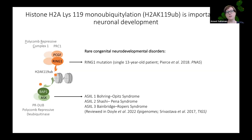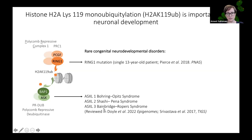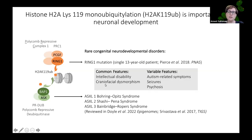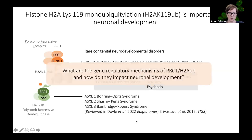H2A ubiquitylation and its regulation are really important in neurodevelopment. This is underscored by several disorders associated with mutations in these components, including mutation of Ring1 identified in a patient with neurodevelopmental disorder, and mutations in the human homologues of ASX — ASXL1, 2, and 3 — which result in rare genetic syndromes with features including intellectual disability, craniofacial dysmorphism, autism-related symptoms, seizures, and psychosis.